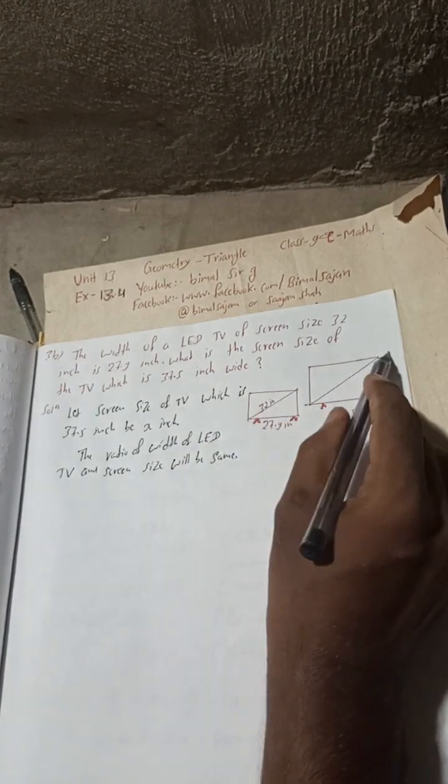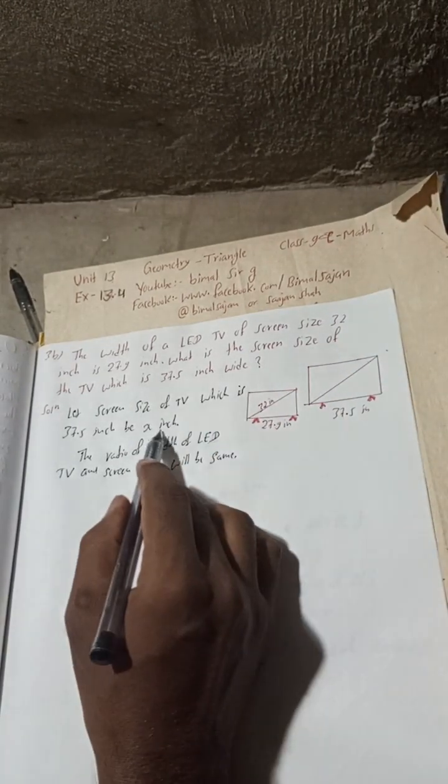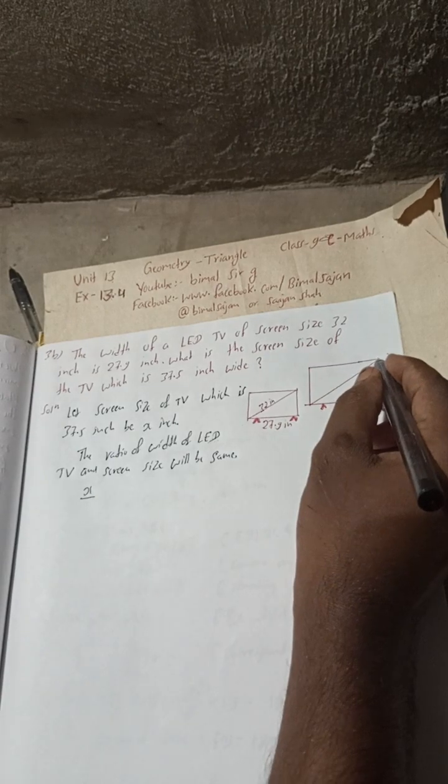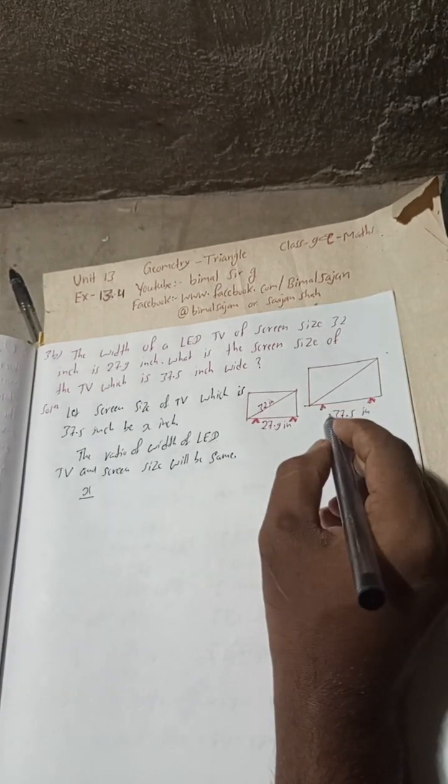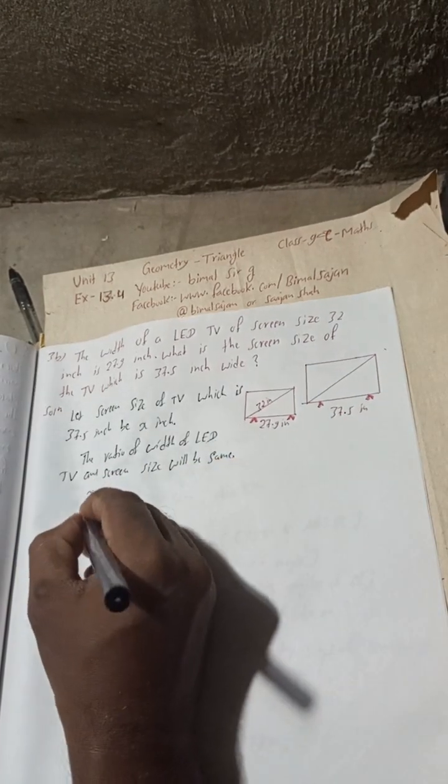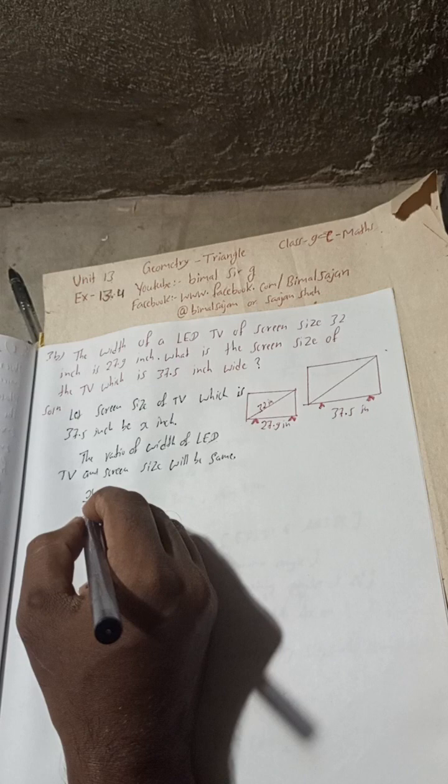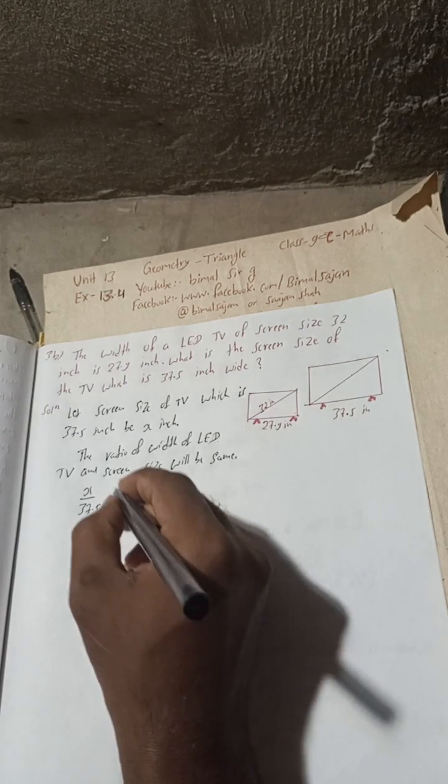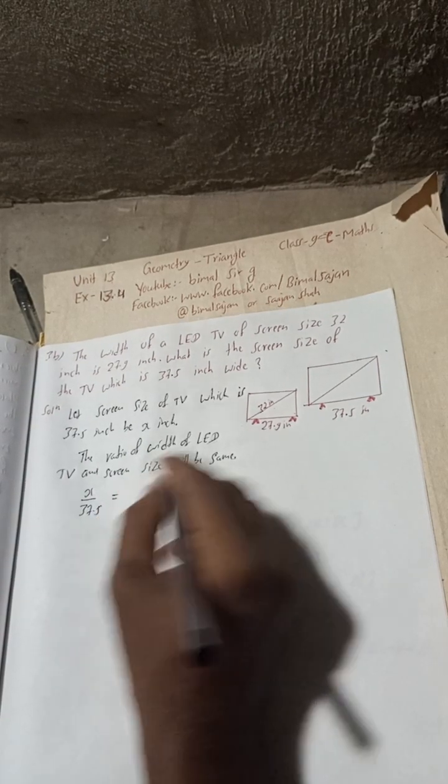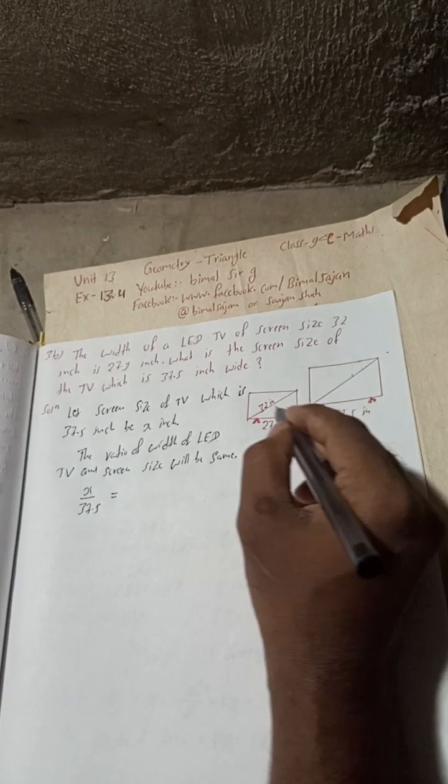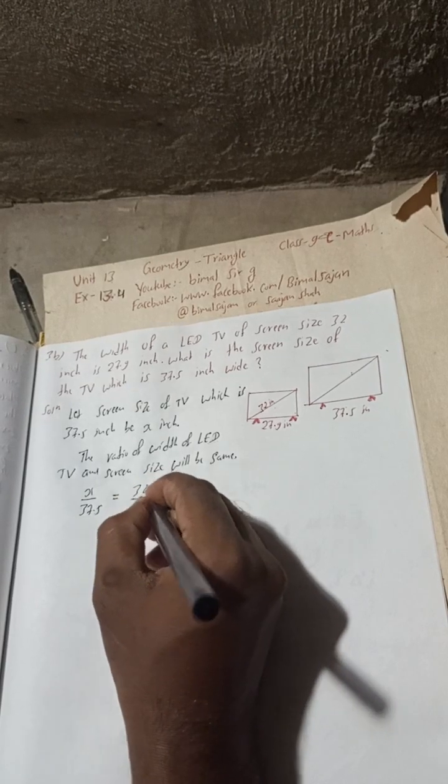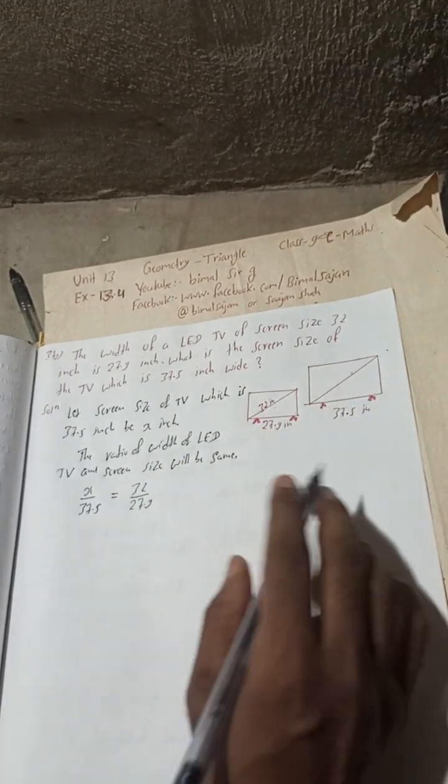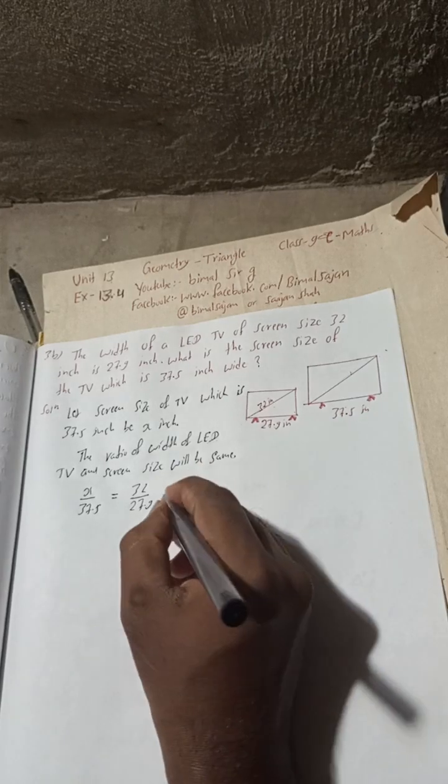Now we have x by 32 equals 37.5 by 27.9. Or you can write x by 37.5 equals 32 by 27.9. You can write both; the ratio will be the same for any TV.